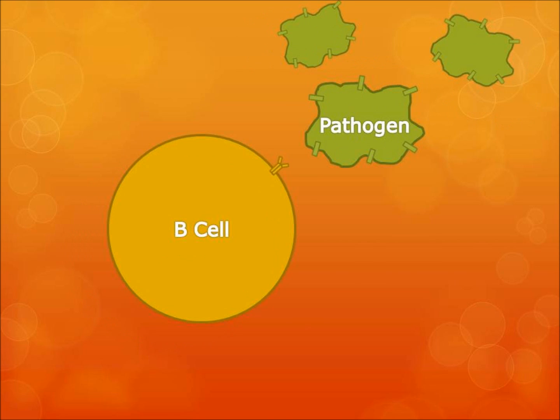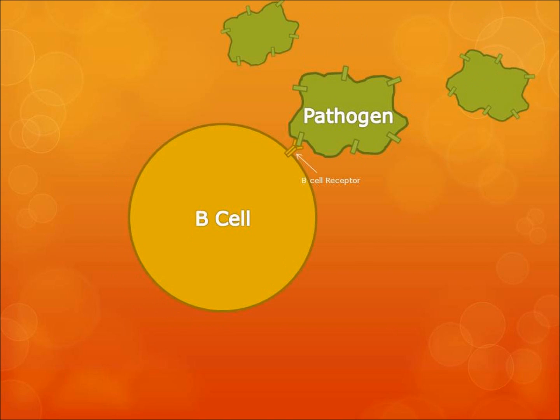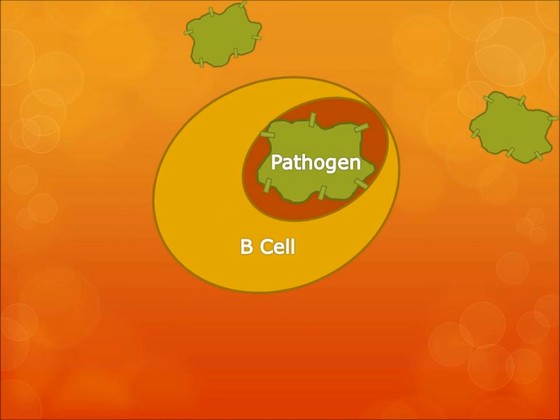First, when the B cell encounters the pathogen, it uses a B cell receptor, or BCR, to bind to an antigen on the surface of the pathogen. Once the BCR and the antigen on the surface of the extracellular pathogen bind, the B cell endocytoses the pathogen.